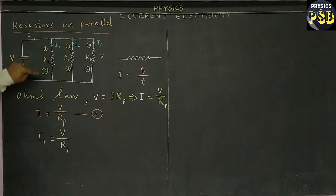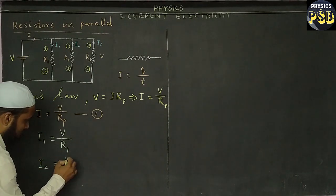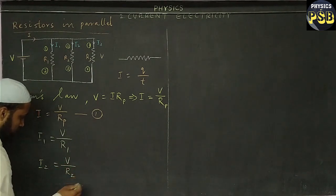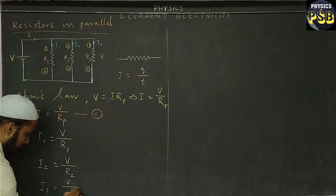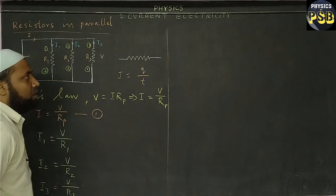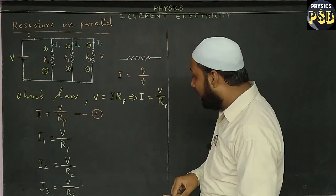So when you go to find out the value of I1, voltage is taken as V because it is constant in the circuit. In the place of RP I will take R1, which is the resistance of this resistor. I2 can be obtained if we replace R1 with R2. Similarly, I3 is equal to V upon R3.